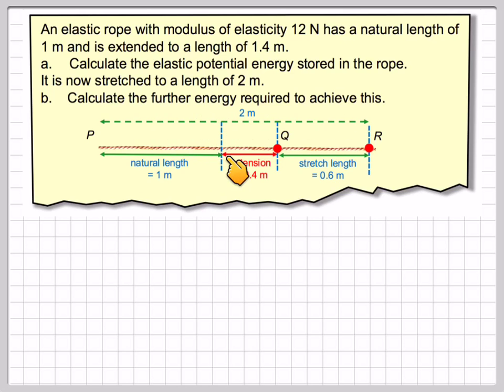First of all, we've got natural length of the rope and it's extended to 1.4, so the extension is 0.4. Then after that we're going to extend it another 0.6 meters to make it 2 meters altogether, and we're going to need the further energy required to achieve this.